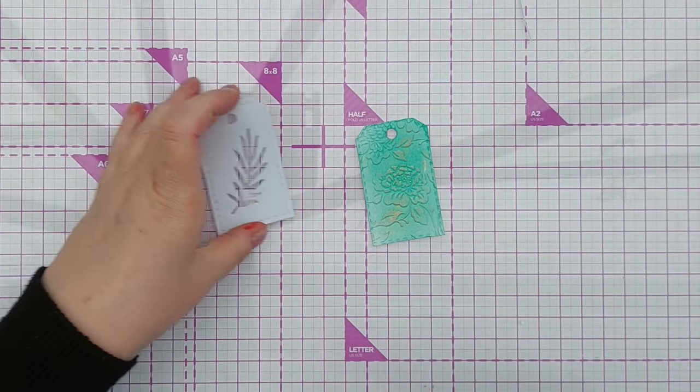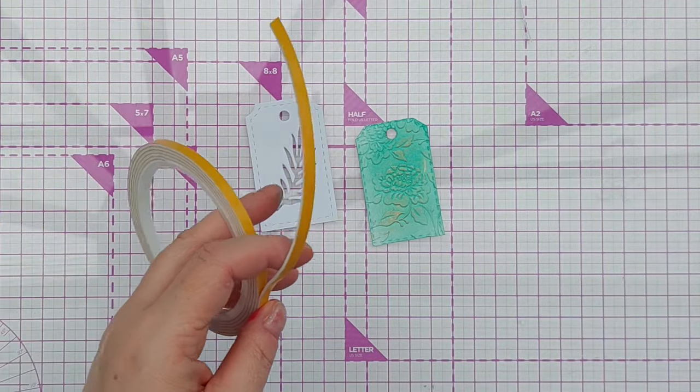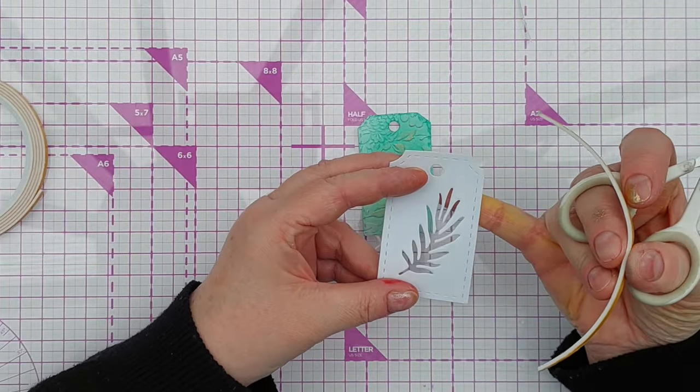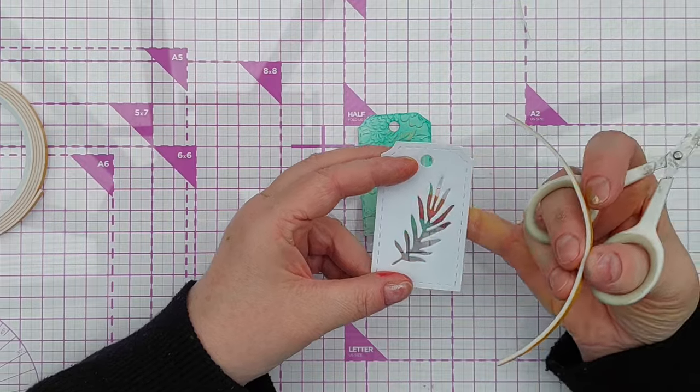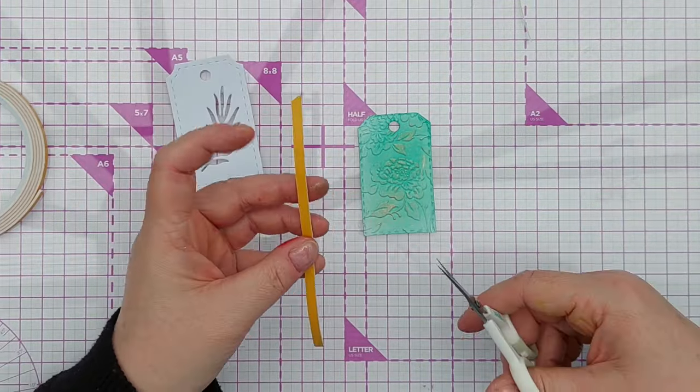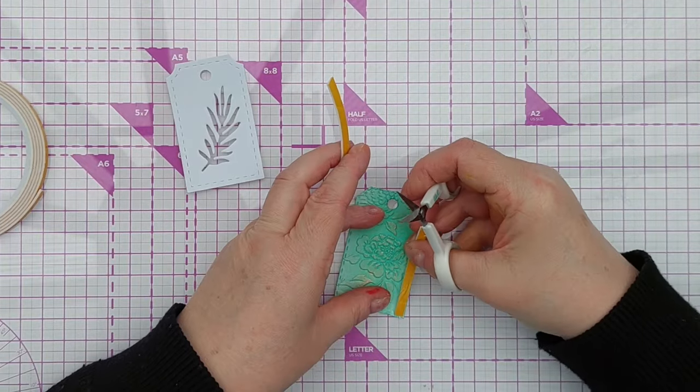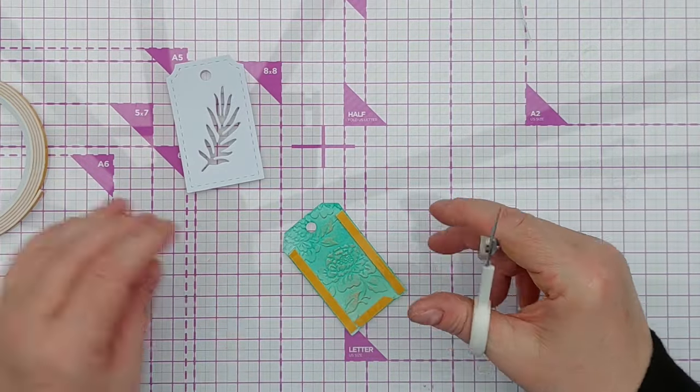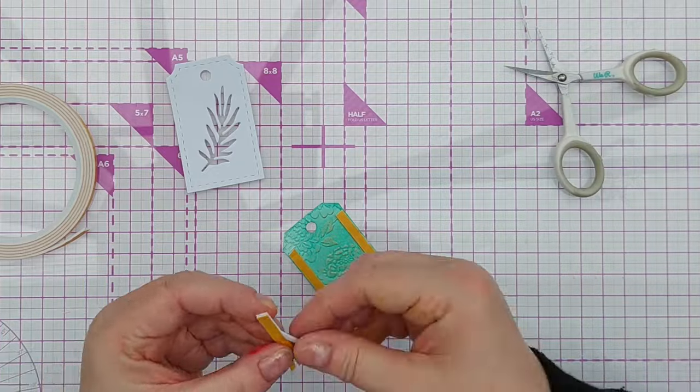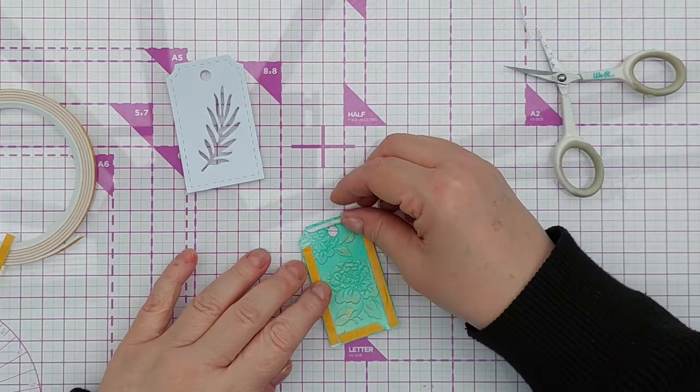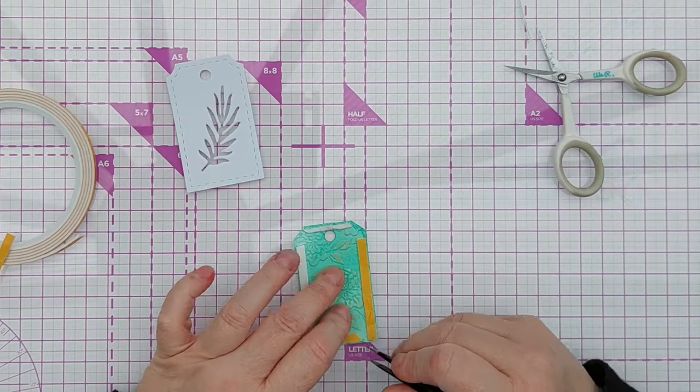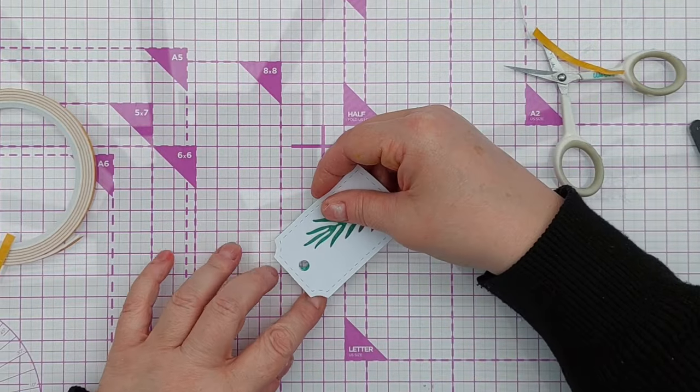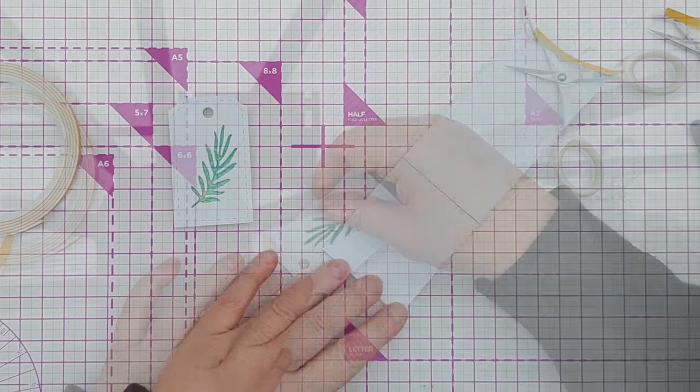I'm going to pop some craft foam in between these two layers to give it a bit of dimension. One thing you could do at this stage is turn this tag into a shaker, so pop a bit of transparent acetate behind there and then add some glitter or sequins. What I want to do is try and line up the hole so you can't see the green.